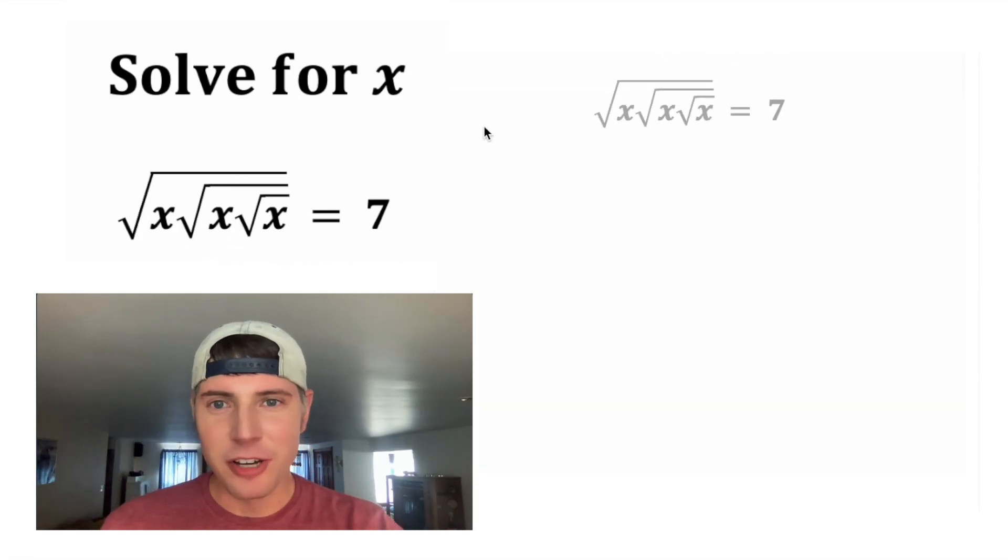I think I said that right. So let's do it. The best way to get rid of a square root is to do the inverse operation, which is squaring both sides.